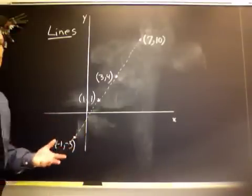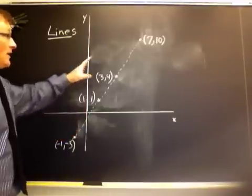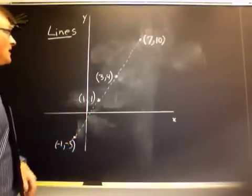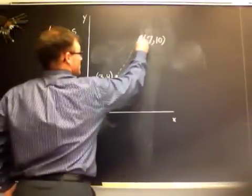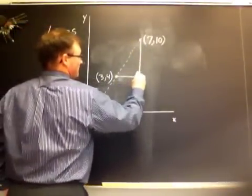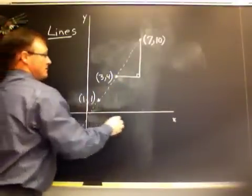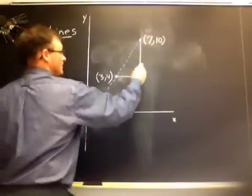But we want to be able to check to see algebraically, by calculation, whether these actually form a line. So the way we're going to do this is to compare the slopes. Slope is equal to rise over run. So we're going to compare the slope between this pair of points and the slope between the next pair and see whether they give us the same value.